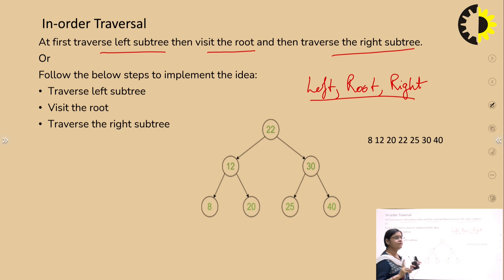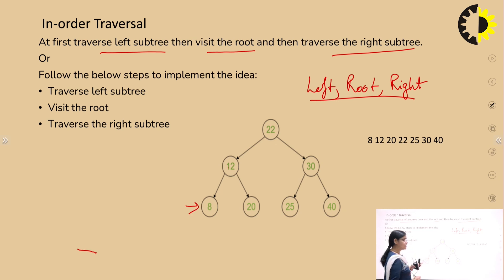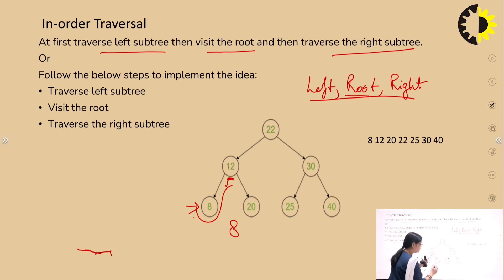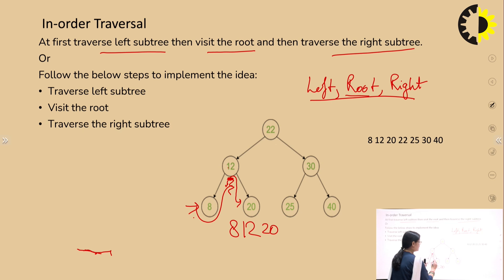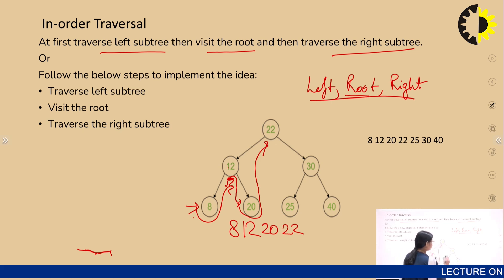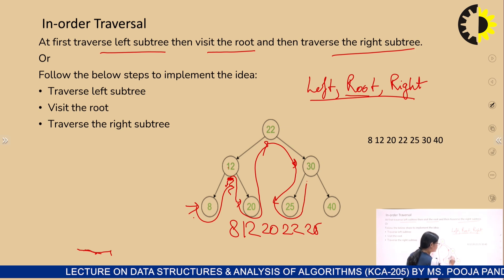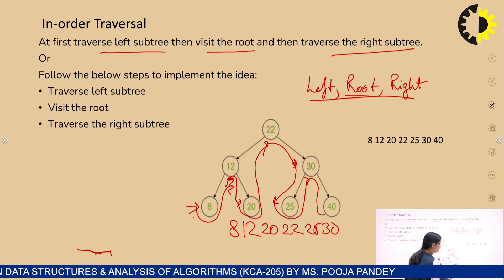For inorder traversal, starting from the leftmost node: we write 8 first — that is the left child. Then we write 12 — the root of that subtree. Then we traverse to the right, which is 20. Then the main root 22. Then we go to 30's left child, which is 25, then 30 itself, and finally 40. The inorder traversal gives us the nodes in sorted ascending order.